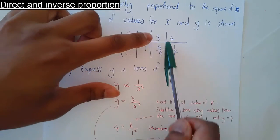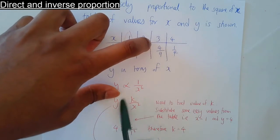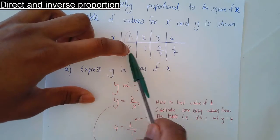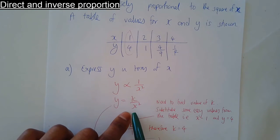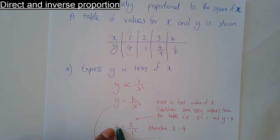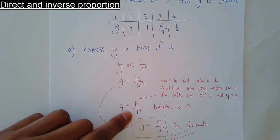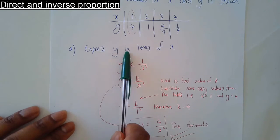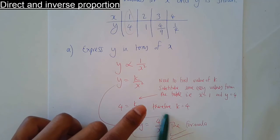Pick any pair of values from the table — I'll pick the easiest one. I don't like working with fractions, so I'll use x equals 1, y equals 4. Replace x with 1 and y with 4: something divided by 1 squared — 1 squared is just 1 — so something divided by 1 to give 4. Obviously k equals 4. So the formula is y equals 4 over x squared. That's y expressed in terms of x.